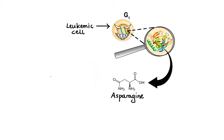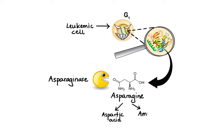This is where drugs called asparaginase come into play. Asparaginase is an enzyme that speeds up the breakdown of asparagine into aspartic acid and ammonia. This results in the depletion of asparagine, inhibition of protein synthesis, cell cycle arrest in the G1 phase, and ultimately apoptosis in susceptible leukemic cell populations.